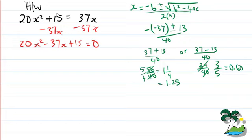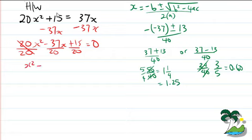To complete the square, this big 20 is going to make it really difficult, so we want to make the leading coefficient 1. We divide everything by 20 — every term gets divided by 20. So we get x² minus 37/20 x, which is 1.85x, plus 3/4 equals 0.